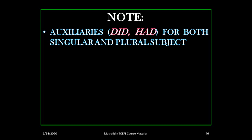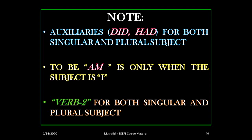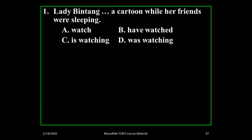For auxiliaries 'did' and 'had,' there is no problem with subject agreement — both singular and plural subjects agree with them. To be 'am' is only used when the subject is 'I,' for example: 'I am a soldier.' The verb 'to' can be used for both singular and plural subjects, and if it appears as a verb the sentence is simple past.